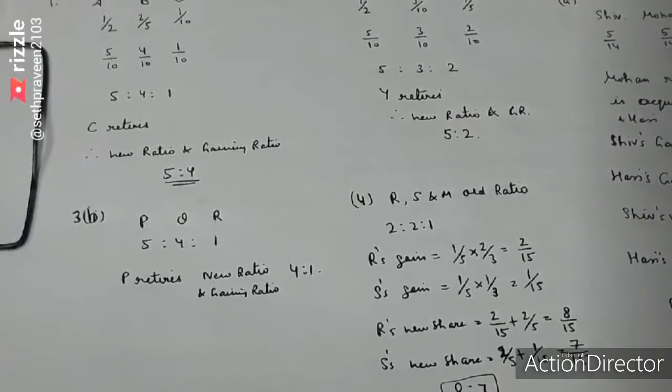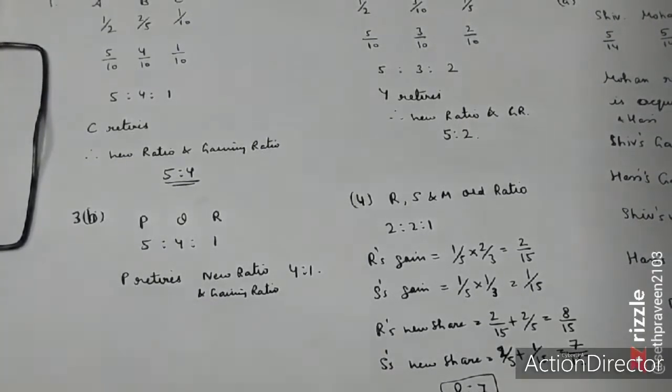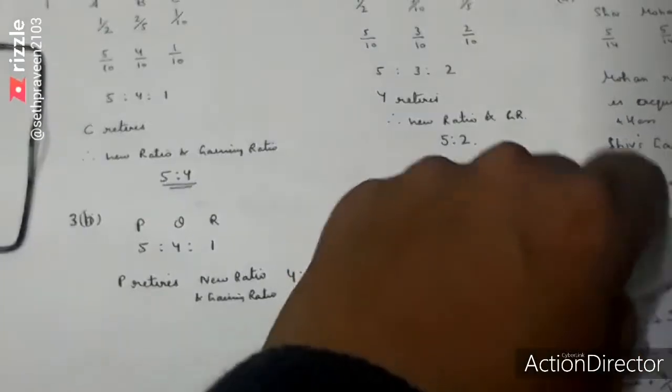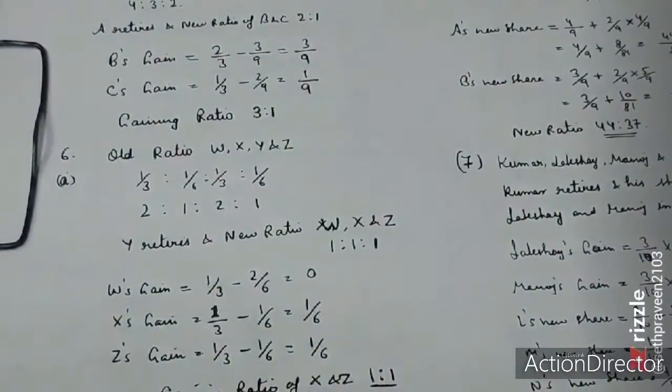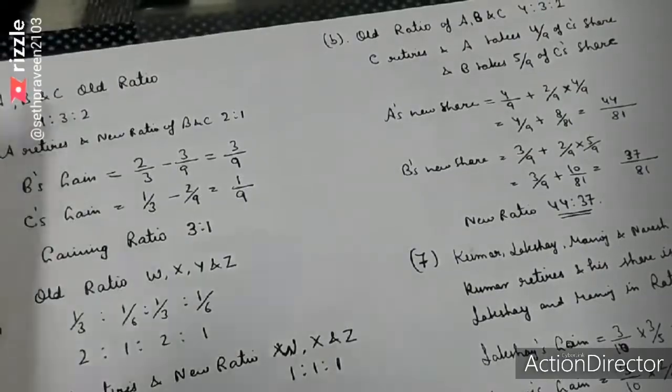The new ratio is for Q and R's retirement. The gaining ratio of Q and R is 2 to 1. So questions 1 to 3 are complete. Let's talk about question 4.